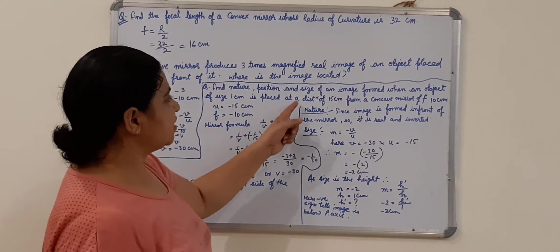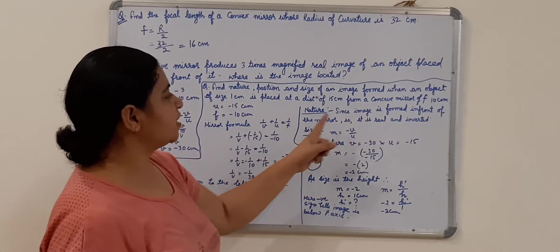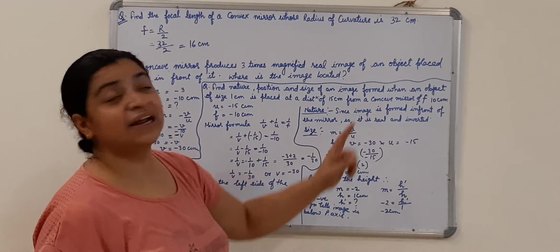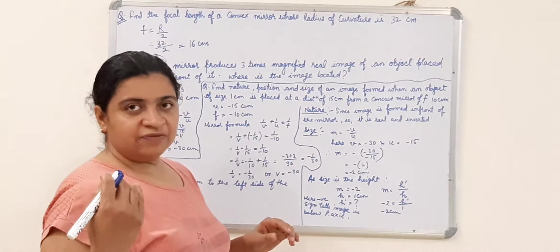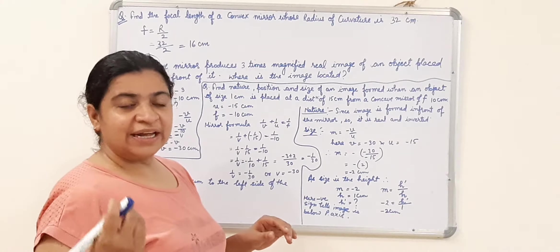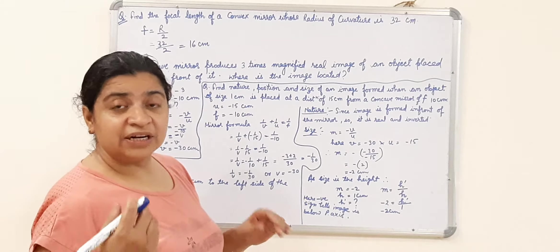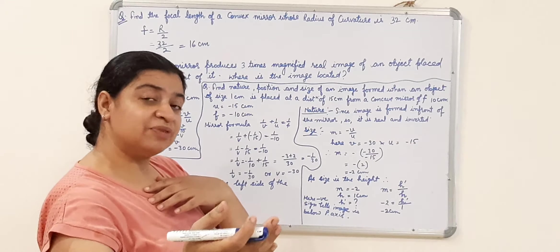Nature, since the image formed is in front of the mirror, so it is real and inverted. Since image is formed in front of the mirror, that is why it is real and inverted. Behind the mirror, it will be virtual and erect.